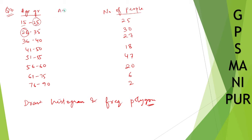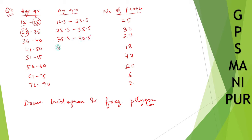To make the intervals continuous, reduce the lower boundary by 0.5 and increase the upper boundary by 0.5. So 15 becomes 14.5, 25 becomes 25.5, 26 becomes 25.5, 35 becomes 35.5, 36 becomes 35.5, 40 becomes 40.5, 41 becomes 40.5, 50 becomes 50.5, 51 becomes 50.5, and 55 becomes 55.5.